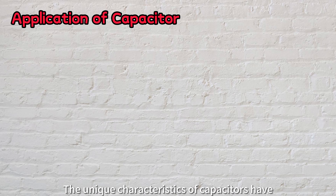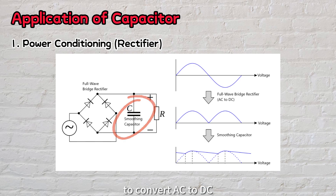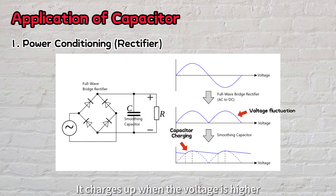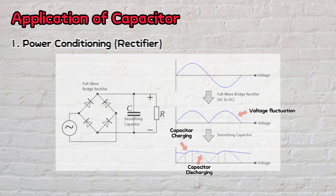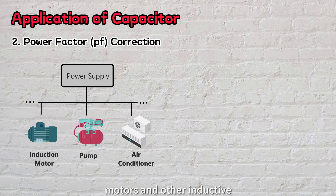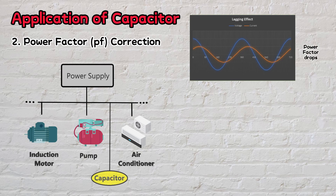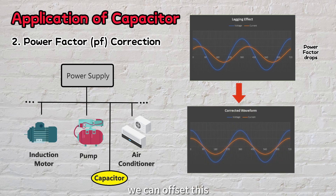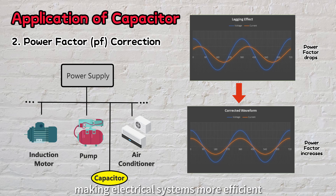The unique characteristics of capacitors have made them incredibly useful in many different ways. For example, in power conditioning, capacitors act as an essential component in rectifiers to convert AC to DC. Capacitors help in smoothing out the voltage fluctuations — they charge up when the voltage is higher and discharge when the voltage is low to boost the voltage, ensuring a steady power supply. Power factor correction is another important application of capacitors. In factories, motors and other inductive loads can cause the current to lag behind the voltage, resulting in a drop in power factor. By installing a capacitor that provides a leading effect, we can offset this lag and bring the current and voltage back in phase, improving the power factor and making electrical systems more efficient.